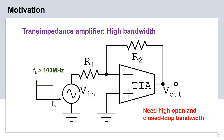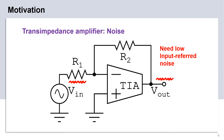Modern 5G communication utilizes bands in the sub-10 GHz regime, where the baseband bandwidth can be more than 100 MHz. Thus, the required amplifier should have open as well as closed-loop bandwidth greater than 100 MHz to support the mixer-first receiver at the RF front end. Since the amplifier is used at the RF front end in the signal path, the noise contribution of the amplifier should be as low as possible.